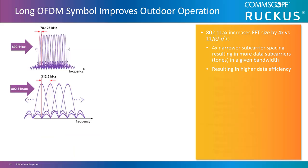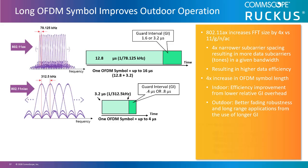Let's look at how the long OFDM symbol improves outdoor operation. In 802.11ax, it maintains the same channel width as 11AC — such as 20, 40, or 80 MHz — however it increases the fast Fourier transform, or FFT, size by a factor of 4. This means there are 4 times more subcarriers in a given bandwidth, resulting in a 4-times reduction in subcarrier spacing: from 312.5 kHz to 78.125 kHz. This gives us frequency domain efficiency and capacity increase, providing 4 times more tones or subcarriers to allocate to multiple users.